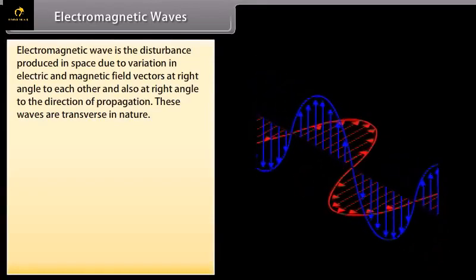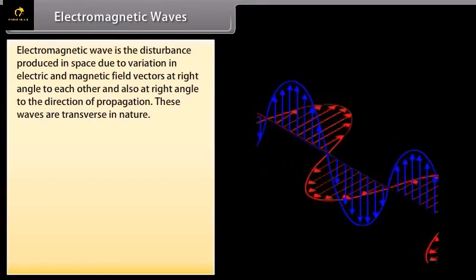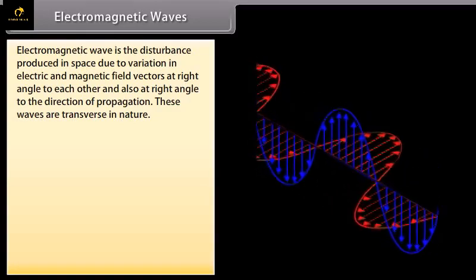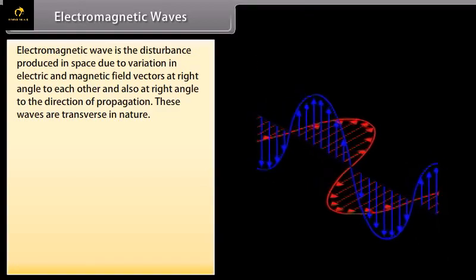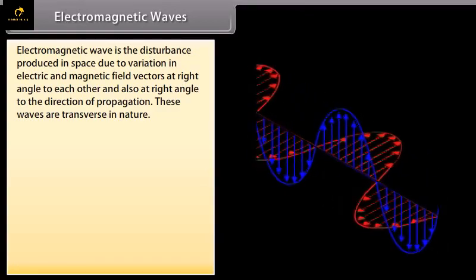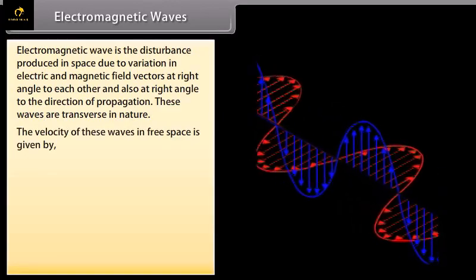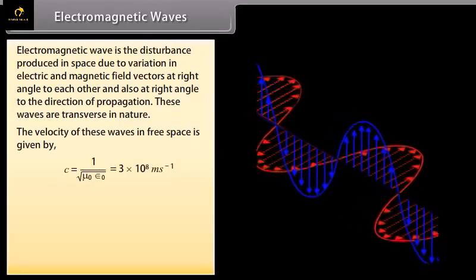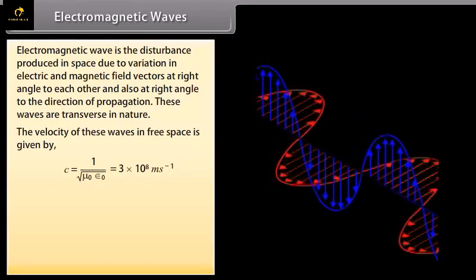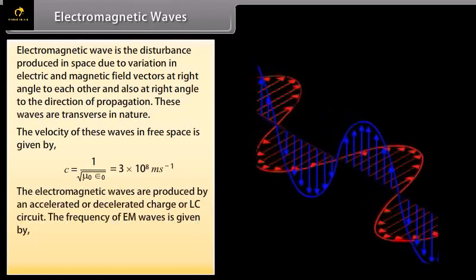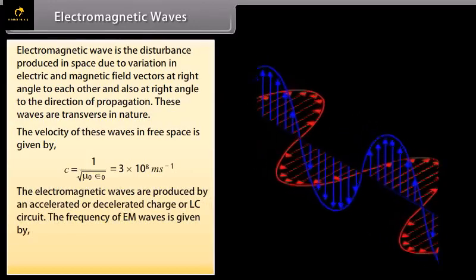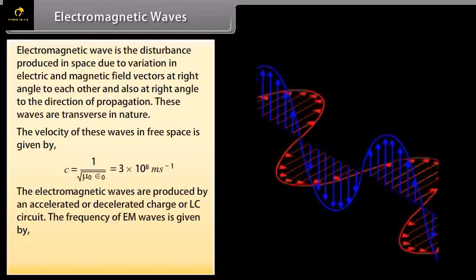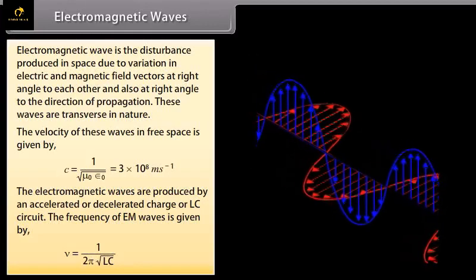Electromagnetic waves. Electromagnetic wave is the disturbance produced in space due to variation in electric and magnetic field vectors at right angle to each other and also at right angle to the direction of propagation. These waves are transverse in nature. The velocity of these waves in free space is equal to the velocity of light which is equal to 3 into 10 raised to the power 8 meter per second. The electromagnetic waves are produced by an accelerated or decelerated charge of LC circuit. The frequency of EM waves is given by 1 upon 2 pi under root LC.